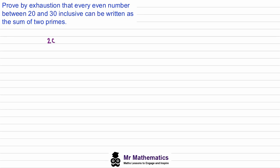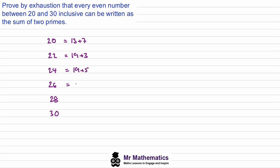The even numbers are 20, 22, 24, 26, 28, and 30. We know 20 can be written as 13 plus 7, both of which are prime. 22 is 19 plus 3. 24 is 19 plus 5. 26 is 23 plus 3. 28 is 23 plus 5. And for 30 we could have 23 plus 7.